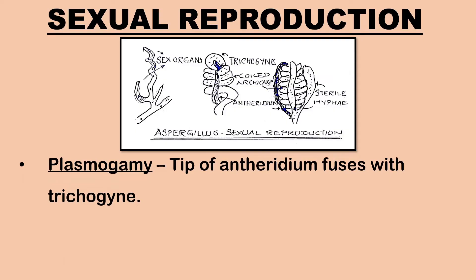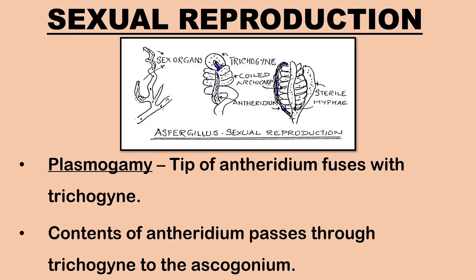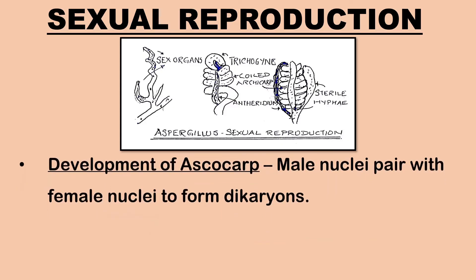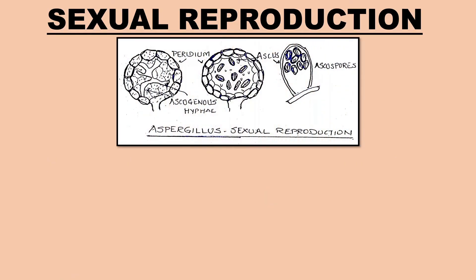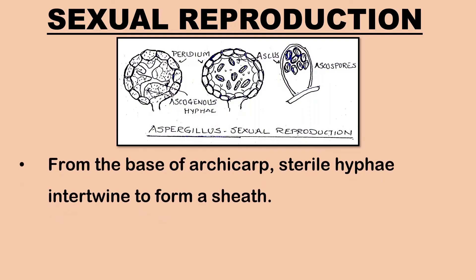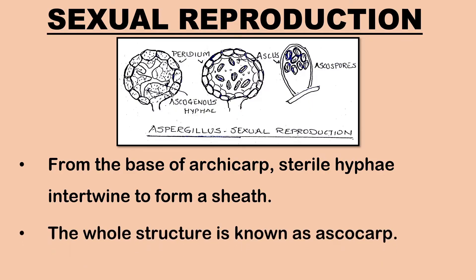The tip of the antheridium fuses with the trichogyne. The intervening wall dissolves and the contents of the antheridium pass through the trichogyne to the ascogonium. Male nuclei pair with the female nuclei forming the dikaryons. After pairing of the nuclei, the ascogonium becomes septate. From the base of the archicarp, several sterile hyphae intertwine to form a pseudoparenchymatous sheath.